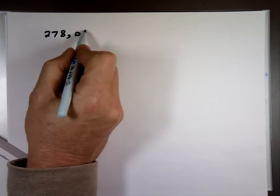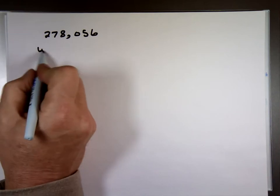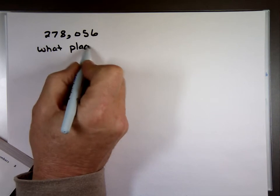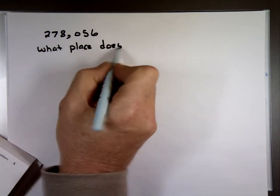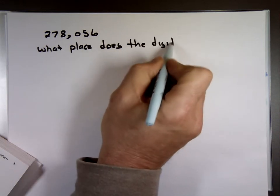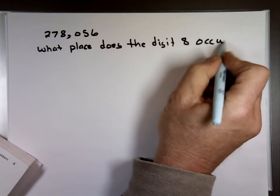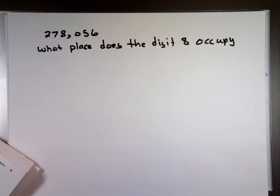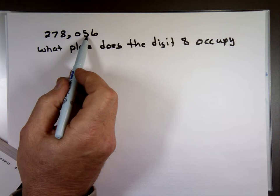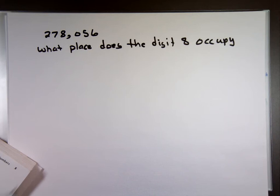278,056. And the question, what place does the digit 8 occupy? Well, what do you think of digit 8 here? Yep, that's the ones, tens, hundreds. This is the thousand. So, for that problem, the answer will be thousands.